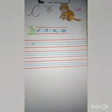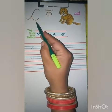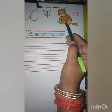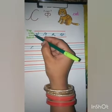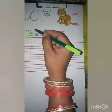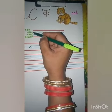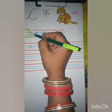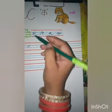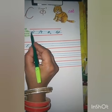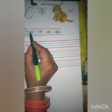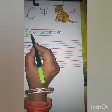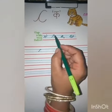Now let's start learning on your worksheet. In your English notebook, there are four lines: top line, middle line, baseline, and bottom line. You have to write the C curve in between two lines — the middle line and the baseline.